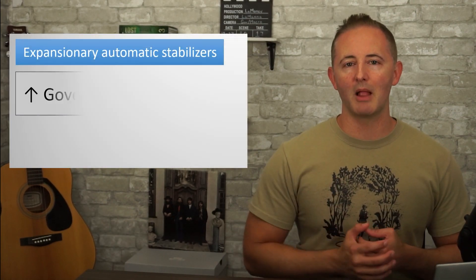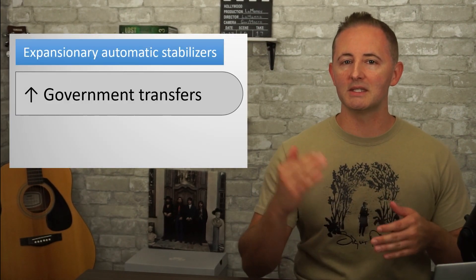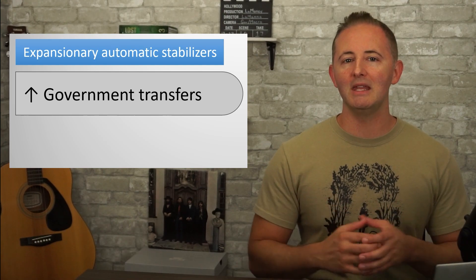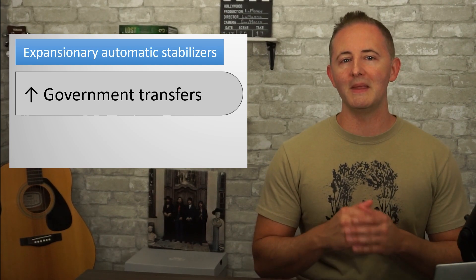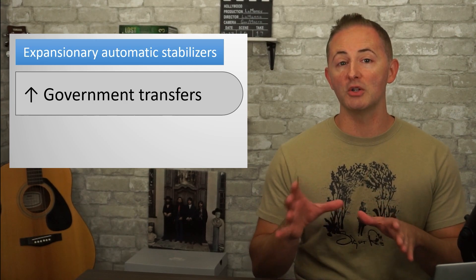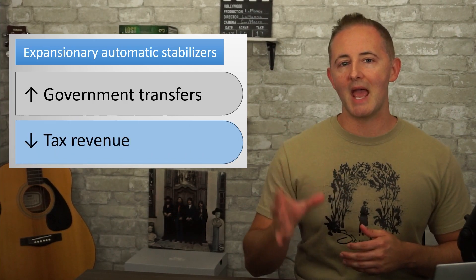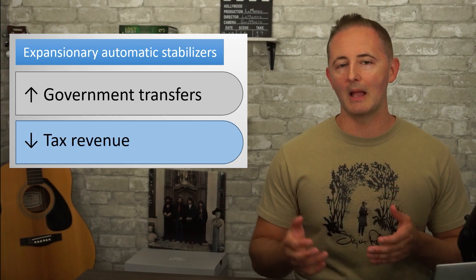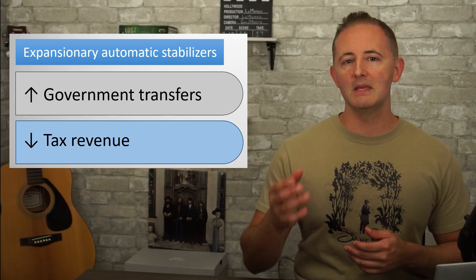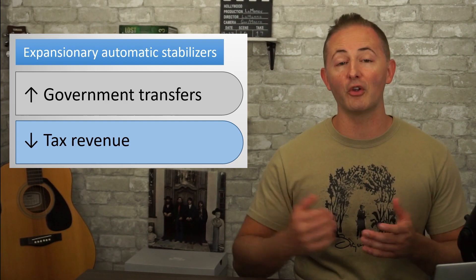When the economy is in a recession, automatic stabilizers are expansionary, helping prevent consumption and aggregate demand from falling further than they would in the absence of such programs. The U.S. tax code also serves as an automatic stabilizer, since less tax revenue is collected as GDP falls, and this also helps prevent consumption from falling even further.